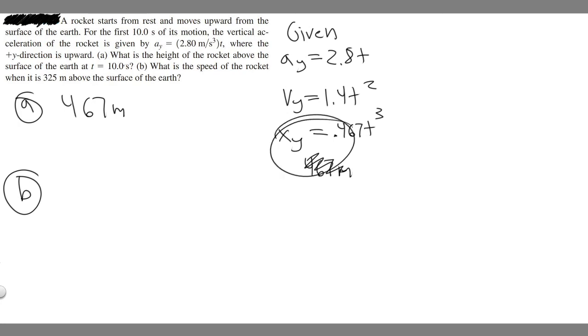Well, we have this position. If we plug in the 325 meters for this, we can find the time it's at that. And then with that time, you can plug it into here and get the velocity. So hopefully that makes sense. Let's go ahead and plug it in.